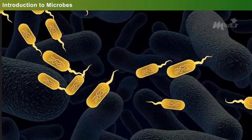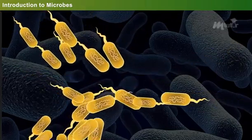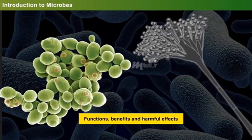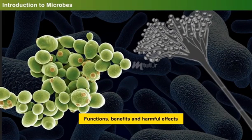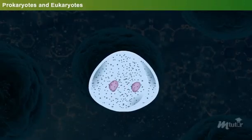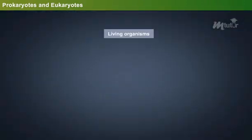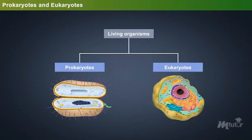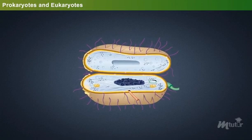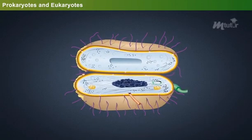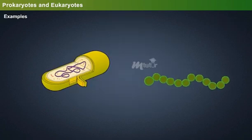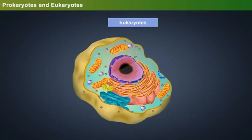By understanding the structure of these microbes, we can have a clear picture of their functions, benefits and harmful effects. Let us begin our exploration of the microbial world around us. Based on the presence and absence of a defined nucleus, living organisms are generally classified into two types: Prokaryotes and Eukaryotes. Unicellular organisms that lack nucleus and membrane-bound organelles are called prokaryotes. Examples: bacteria and blue-green algae.